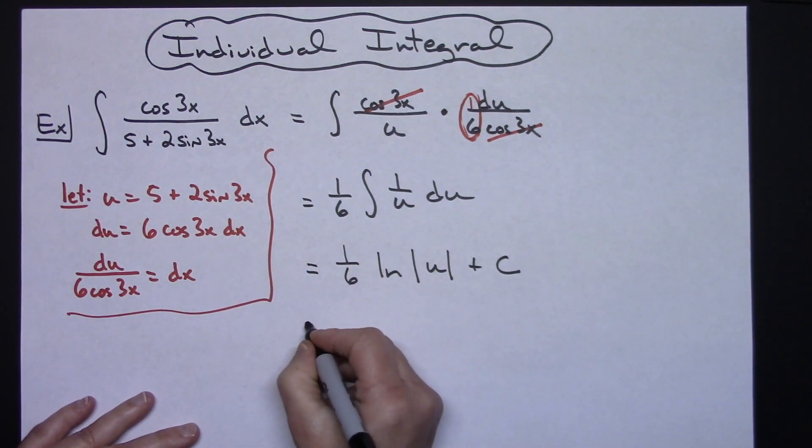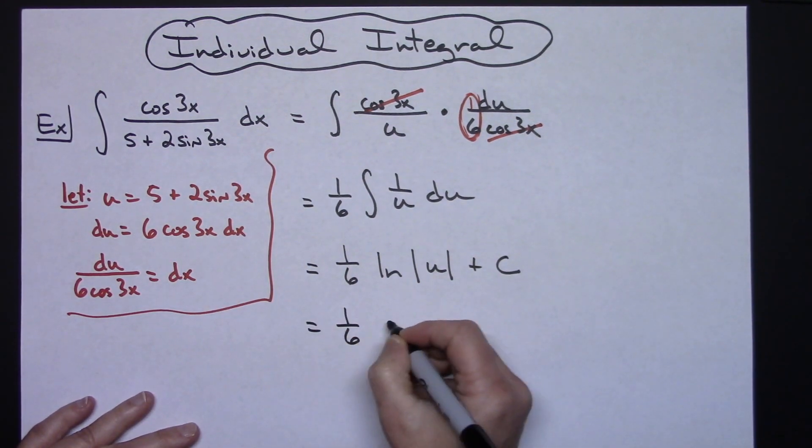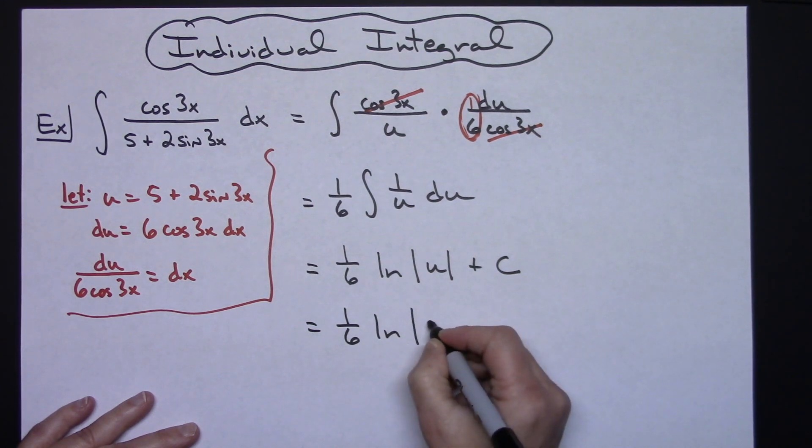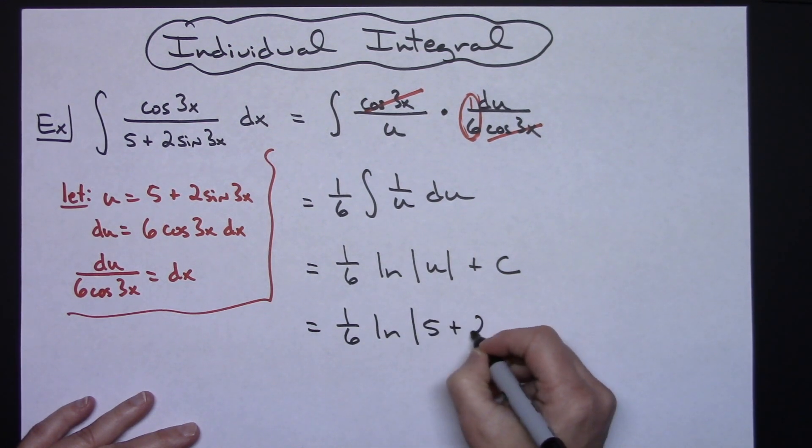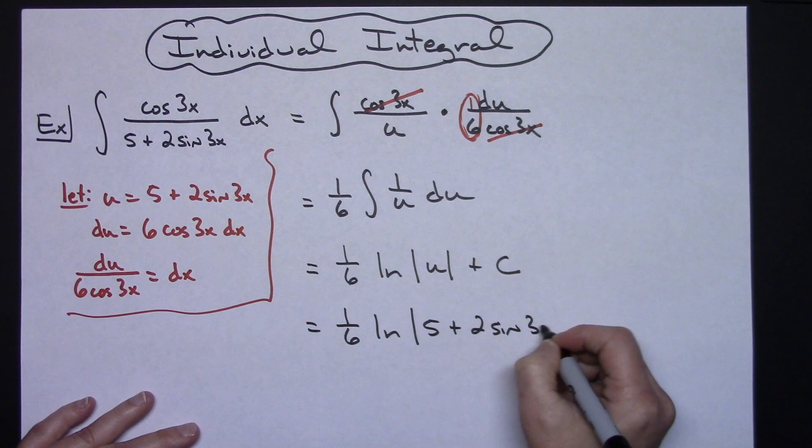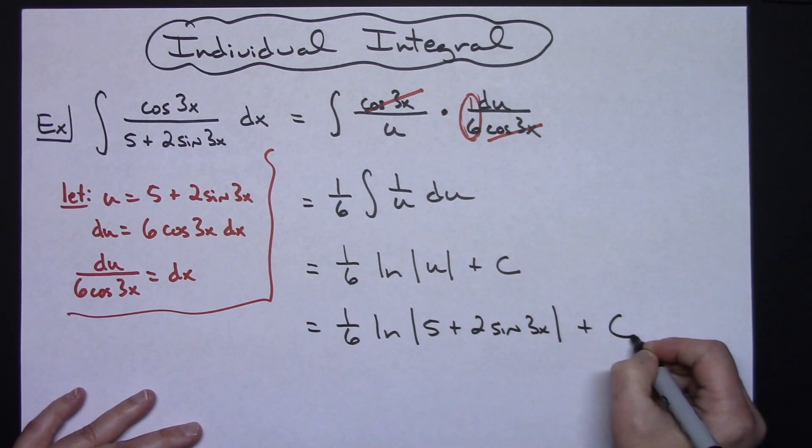We can integrate that pretty simply with 1/6 natural log absolute value of u plus c, and then replacing u with what we said it was going to be we'll have 1/6 natural log absolute value 5 plus 2 sine 3x and then plus c.